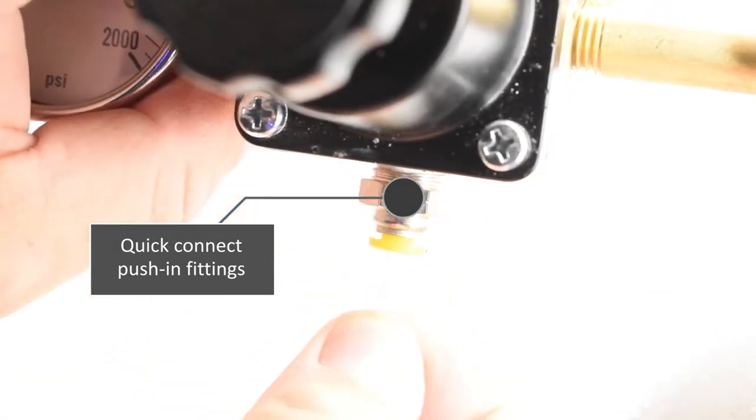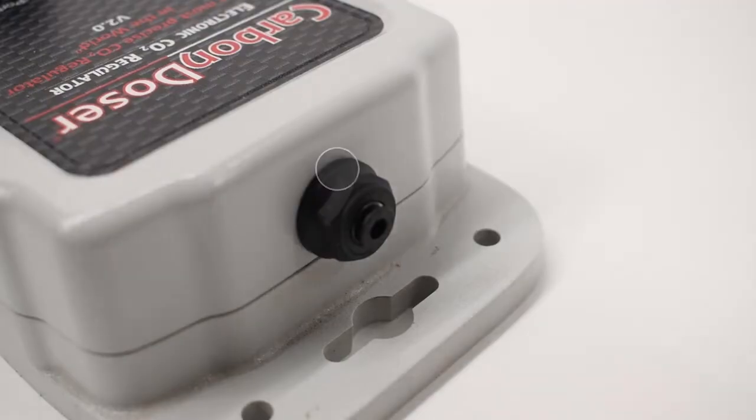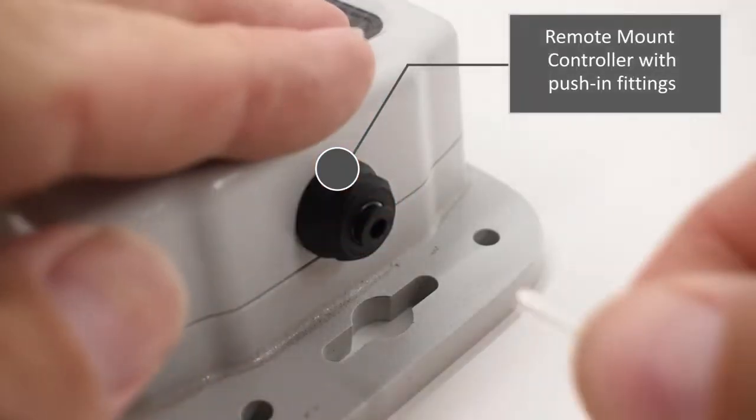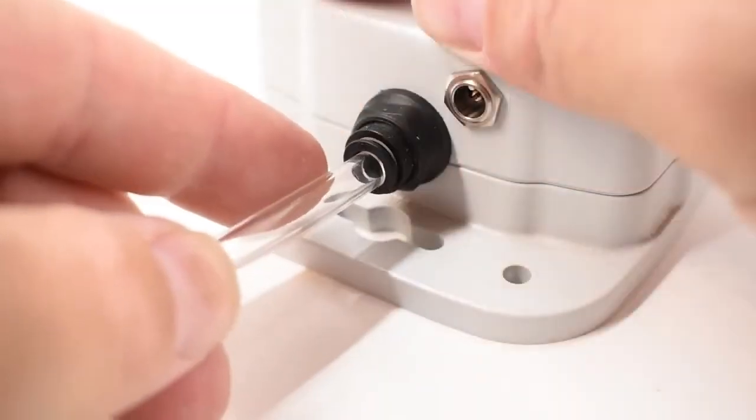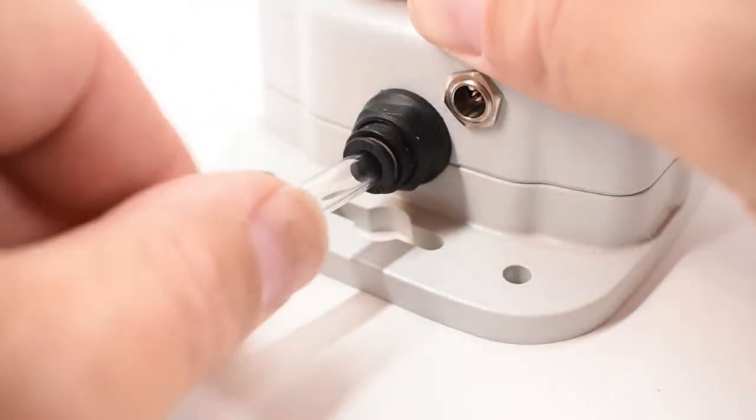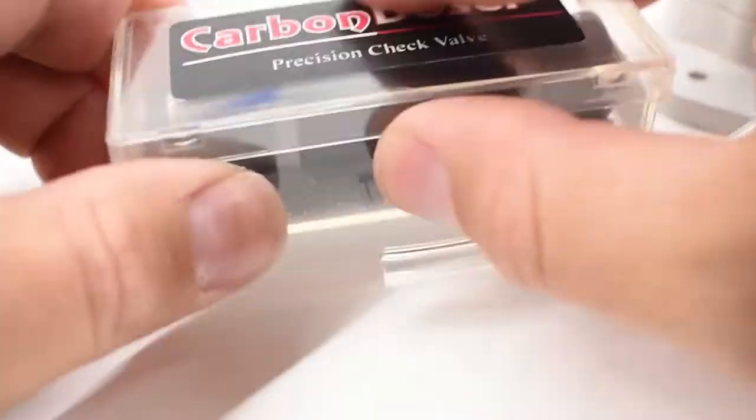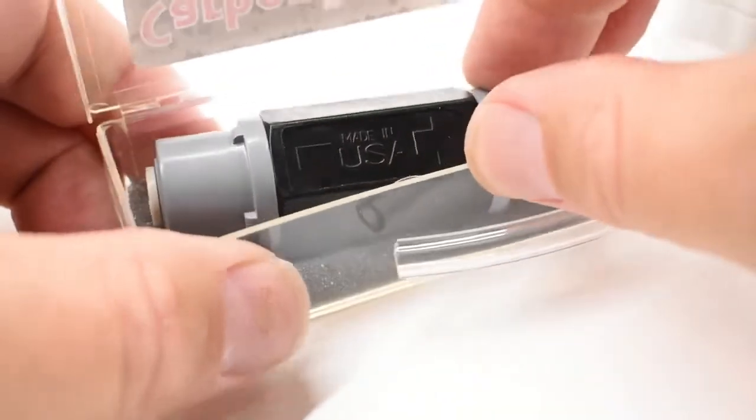Use the Quick Connect fittings to connect the regulator to the remote carbon doser control box. The quarter-inch Quick Connect fitting, found on the bottom of the remote box, is used to connect to your CO2 or calcium reactor.